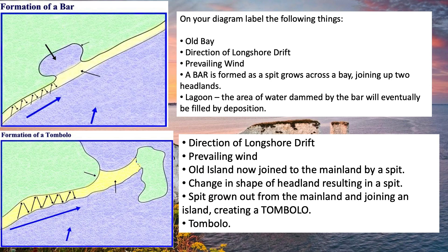We're going to move on to the formation of a bar and a tombolo. These are fairly easy to get your head around — they both form where a spit has done something extra. For a bar: on the coastline where there was an old bay, longshore drift has caused a spit to form. As the spit has grown and covered up the entrance to the bay, this is what we call a bar. It leaves behind a lagoon — an area of water dammed by the bar — which will eventually be filled by deposition and disappear over time.